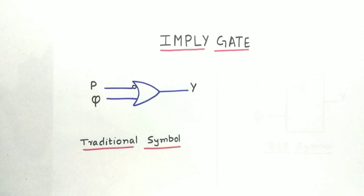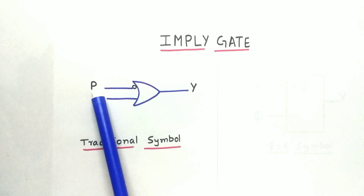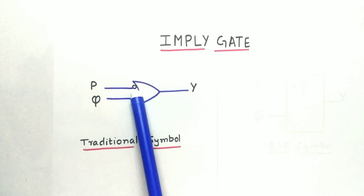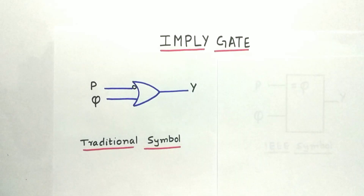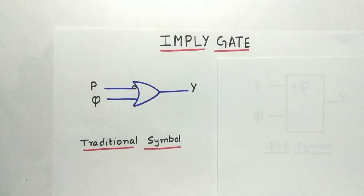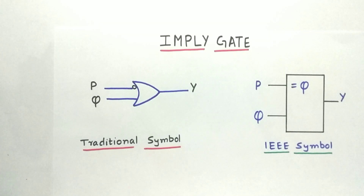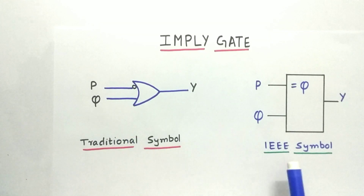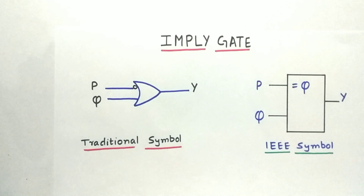It's an OR gate, but one of the inputs is complemented. As you can see, the input P is complemented and then given to the OR gate. The IEEE representation of the implied gate is as such — this is the normal gate symbol and this is the IEEE format. To know about the functionality, let's go to the truth table.